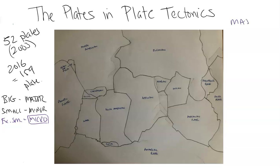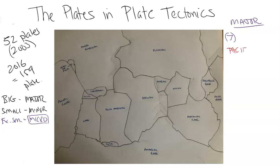Let's look at the major plates — the big ones. When you do research, you can find articles and sites that document different numbers based on classification. The major plates don't really change; it's more on the minor and microplates that fluctuate. There are seven major plates, listed in order of size. The first is the Pacific plate — an oceanic plate with oceanic crust. It's the largest, covering one third of the planet, at about 103 million square kilometers.